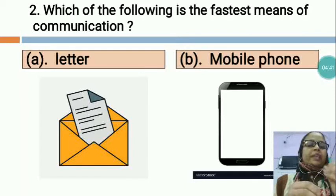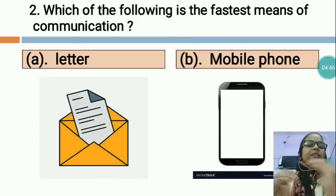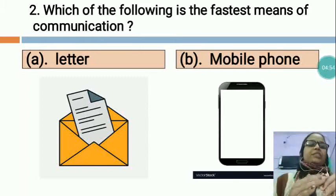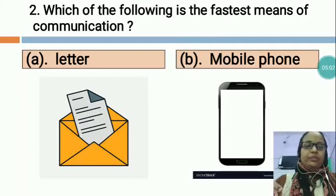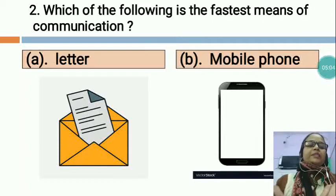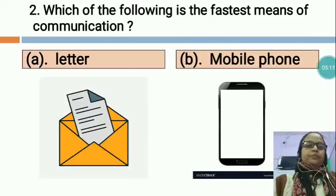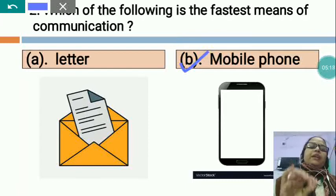Within a few seconds you can communicate to anyone using a mobile phone, but with a letter it takes time — first you write, drop it in the letter box, and then the postman collects and distributes all the letters. So which is the fastest means of communication? Mobile phone. So we will tick mobile phone. B is the correct option.